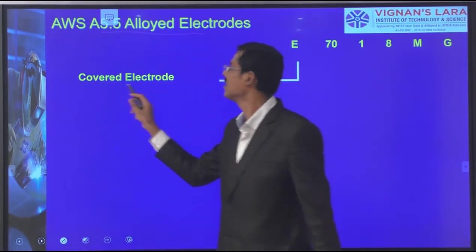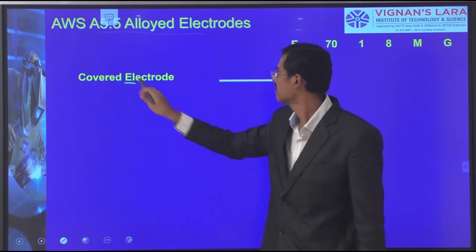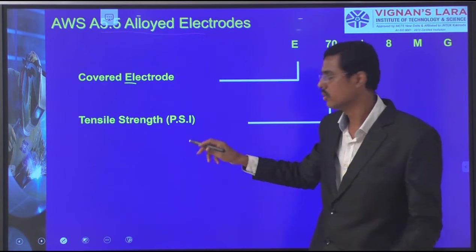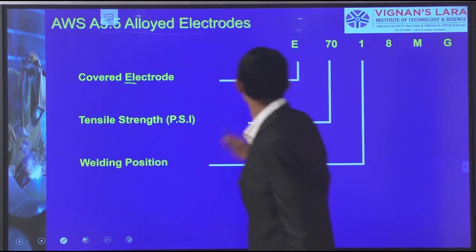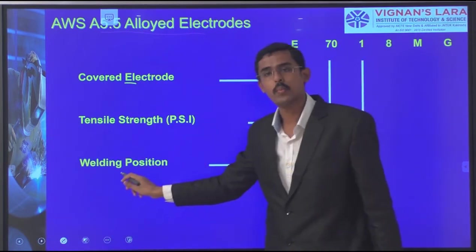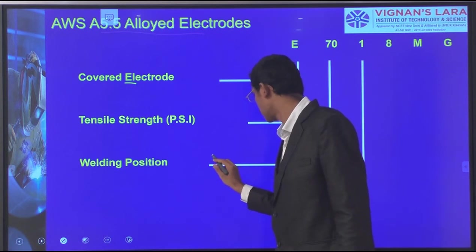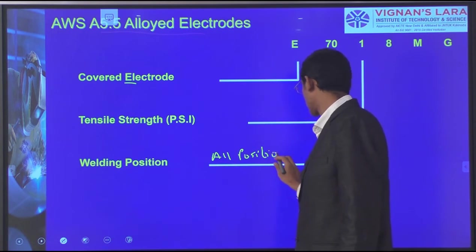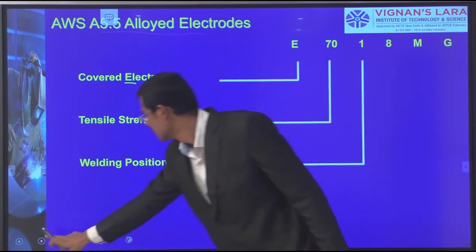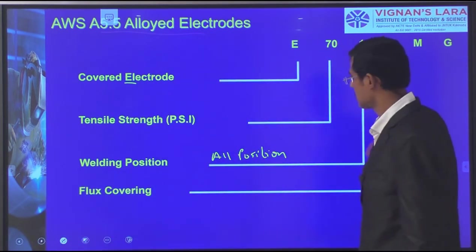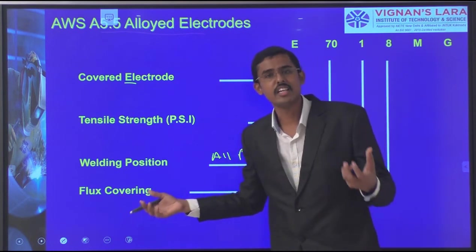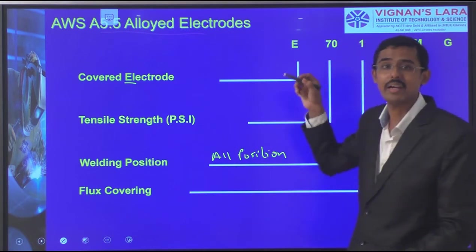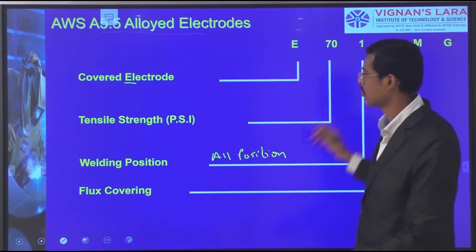Here at first, 'E' represents the covered electrode. '70' represents the tensile strength value. The third digit '1' represents the welding positions — maybe 1G positions, all positions. All positions represents all welding positions. The next digit '8' represents the flux covering — whether it is a rutile covering, basic covering, or cellulose covering — with respect to the supplier manual. The '8' represents the specific flux covering method; we have to see the supplier manual with respect to standards. 'M' represents the moisture content — how much moisture can be absorbed, at what temperature it has to be baked, such as 300°C, 150°C, or 70°C conditions.